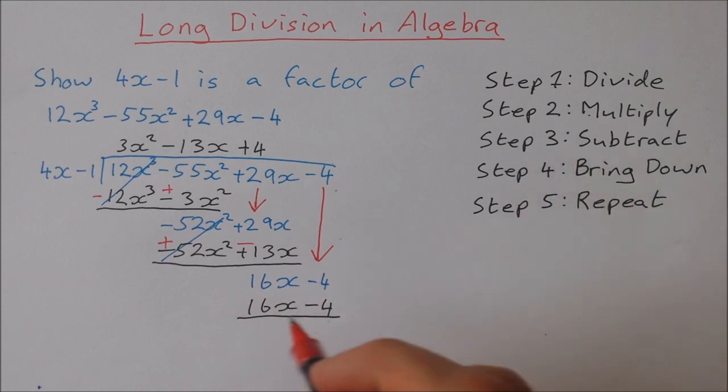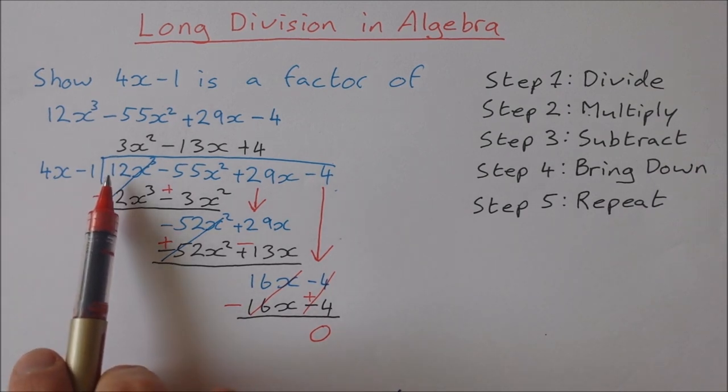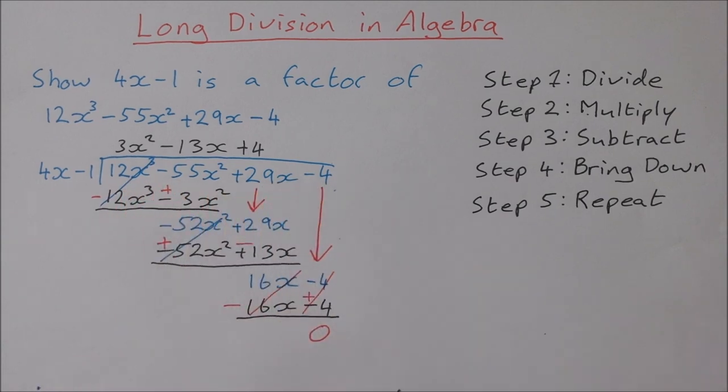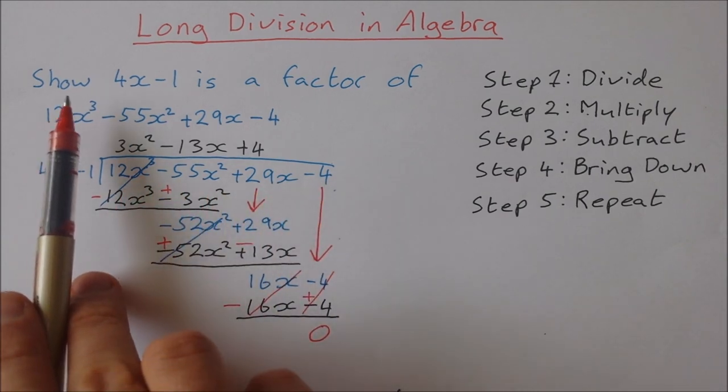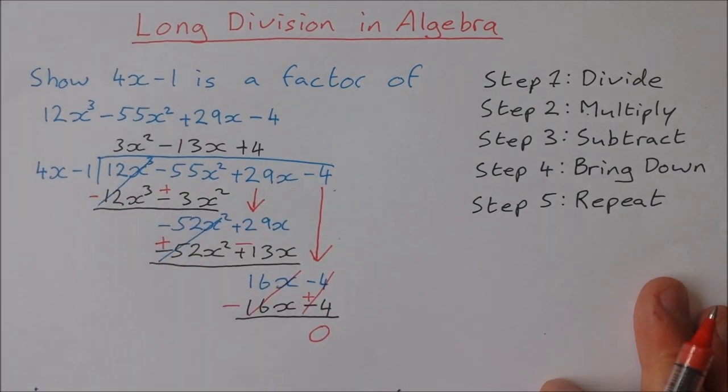When I subtract step 3, change both signs. That gives me 0. Once I get 0 down here that means I have no remainder. That means that 4x minus 1 has divided evenly into our cubic expression and therefore 4x minus 1 is a factor of the cubic expression.